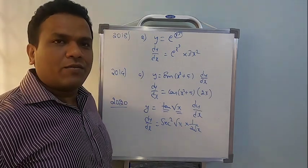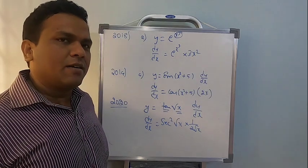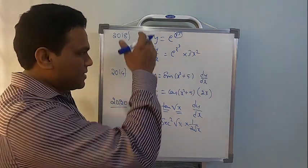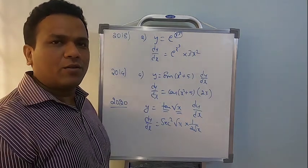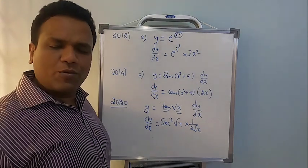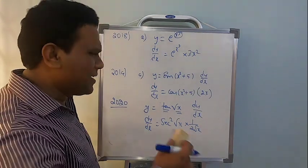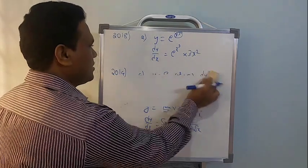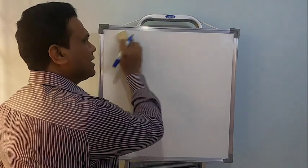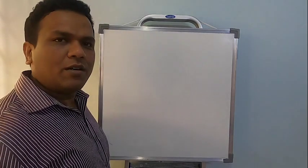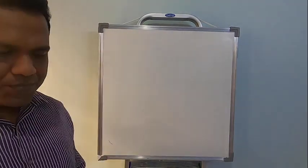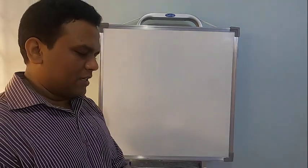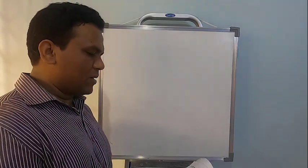Starting from 2014, when the NCERT syllabus began, every one-mark column in the final examination is based on chain rule. I have discussed every one-mark problem from 2014 to the previous examination. Now let us move on to two-mark problems.